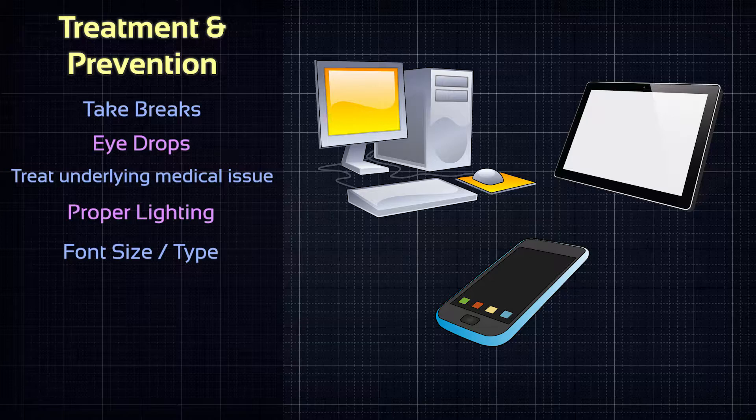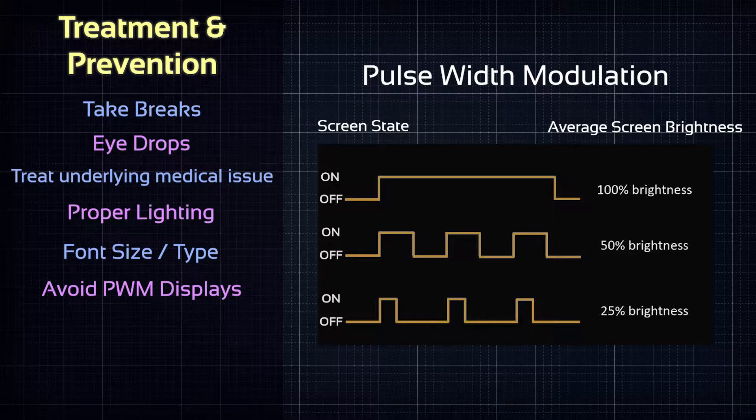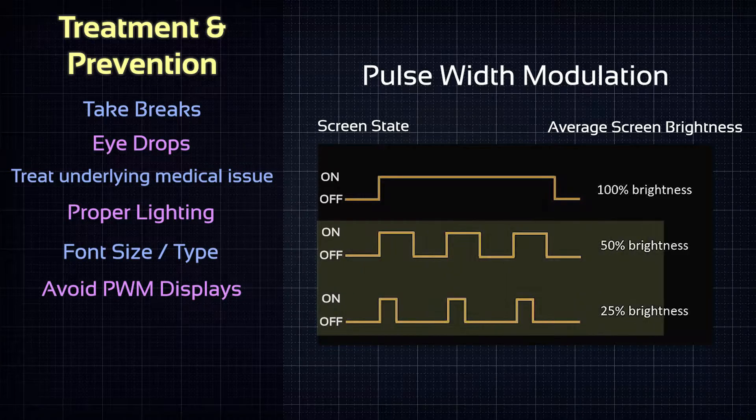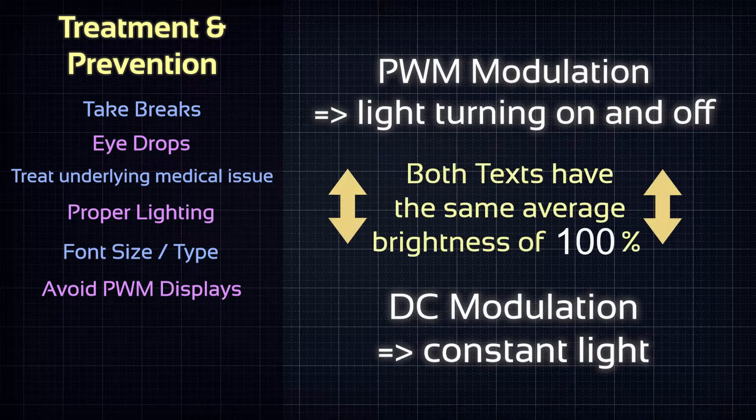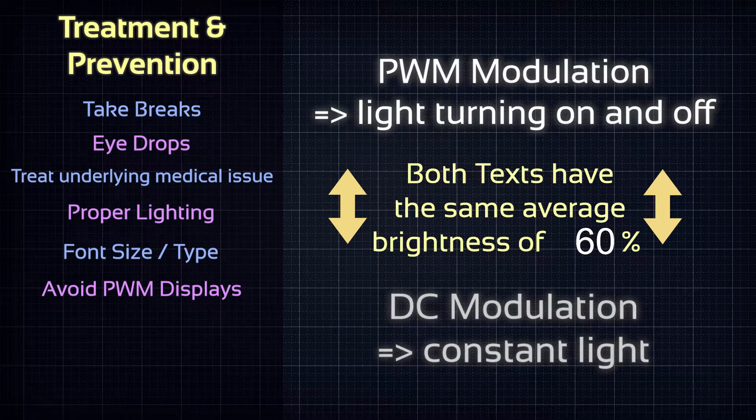After all, it is estimated that more than 50% of people struggle with it. Firstly, avoid using displays that use pulse width modulation, a technology that makes the screen turn off and on constantly. And that flickering gets worse on dimmer settings.